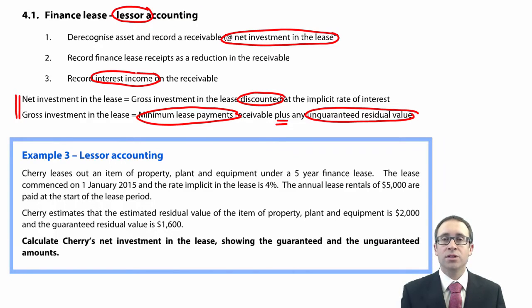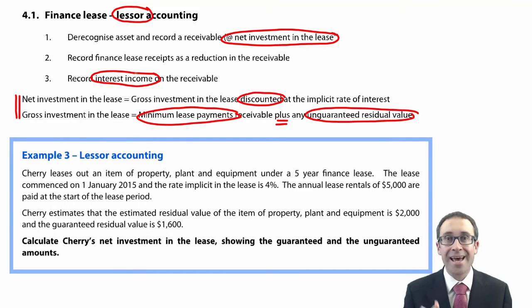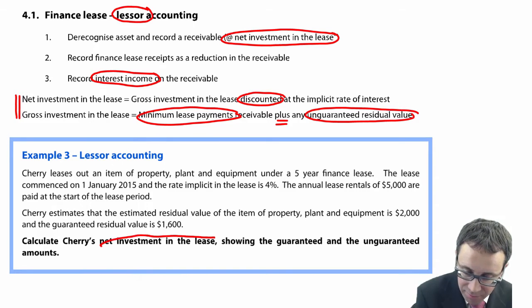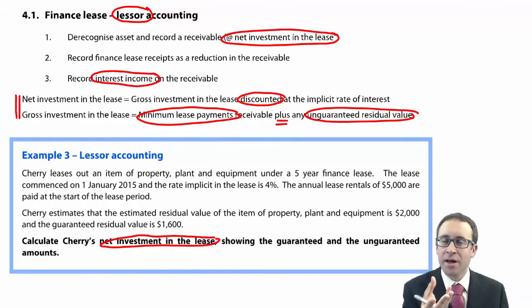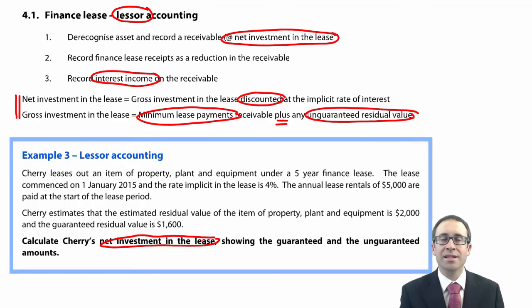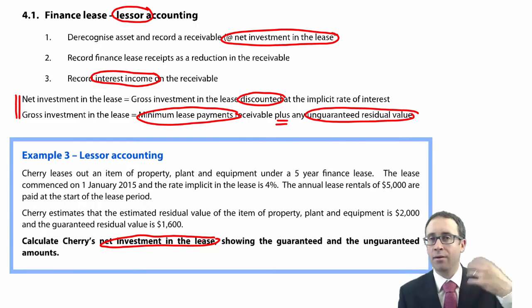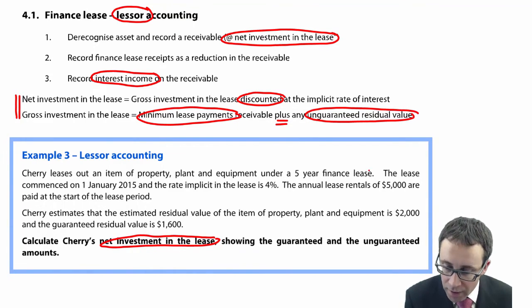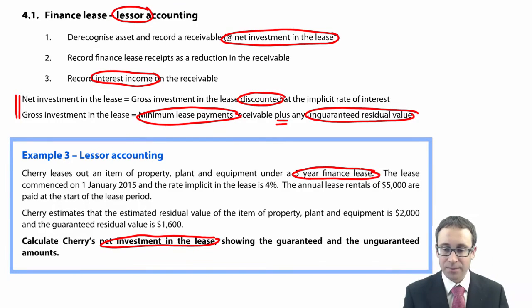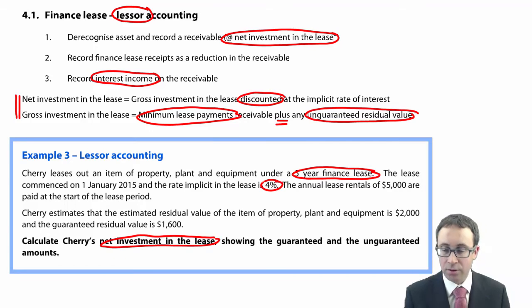It's the numbers that get slightly more complicated, so let's go through and work with the example. Calculate Cherry's net investment in the lease. To work out the net investment you need to work out the gross investment — the minimum lease payments and any unguaranteed residual value — and discount it back to present value. Cherry leases out an item of property plant and equipment under a five-year finance lease. The lease commenced on the 1st of January and the rate implicit is 4%, which we'll use for discounting.